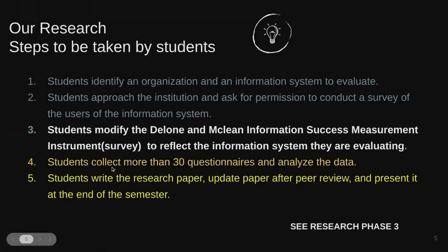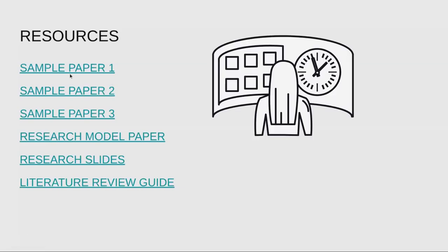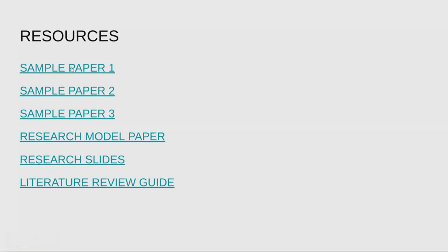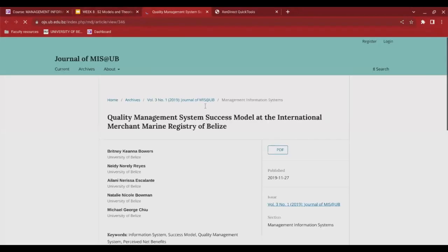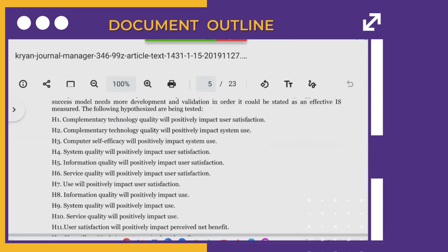Finally, you'll be writing a research paper, getting it peer reviewed, and presenting it at the end of the course. I've added some resources including sample research papers, the research model paper, and the literature review guide — I'll share these slides with you later in the session. Let's look at one of the articles from the Journal of MIS at UB. I try to share papers submitted by students so you have an idea of what you're working towards. This group looked at the quality management system success model at the International Merchant Marine Registry.